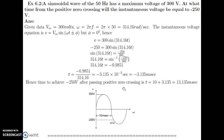Let us see the second example. A sinusoidal wave of 50 Hz has a maximum voltage of 300 Volts. At what time from the positive zero crossing will the instantaneous voltage be equal to minus 250 Volts? So in the AC waveform the maximum value is 300 Volts, and we need to find at what instant the voltage becomes minus 250 Volts.